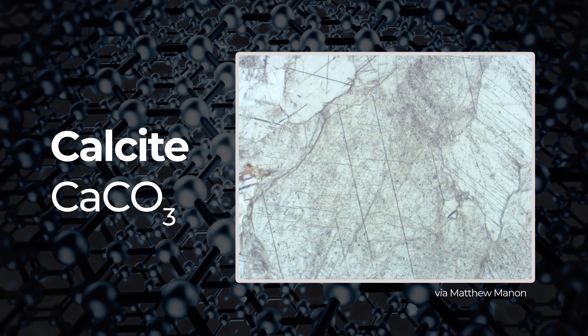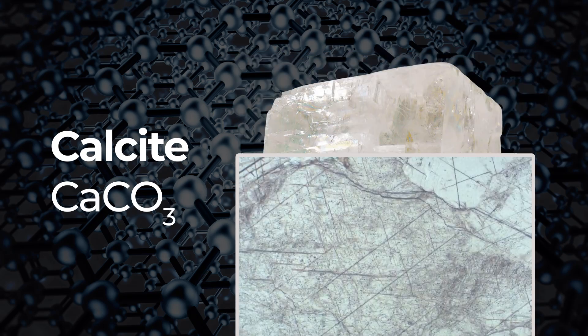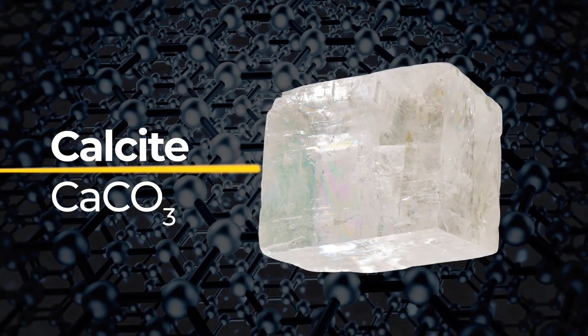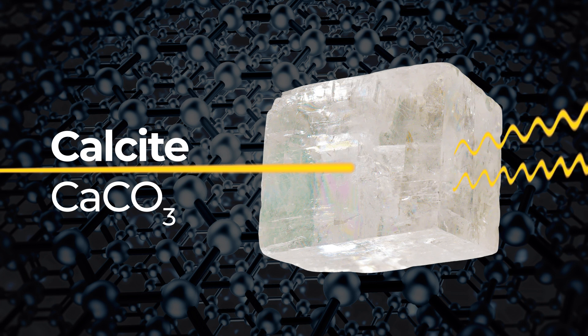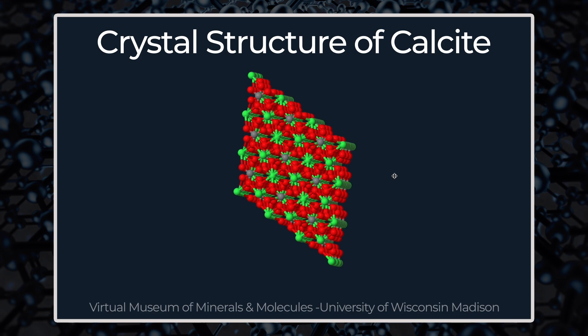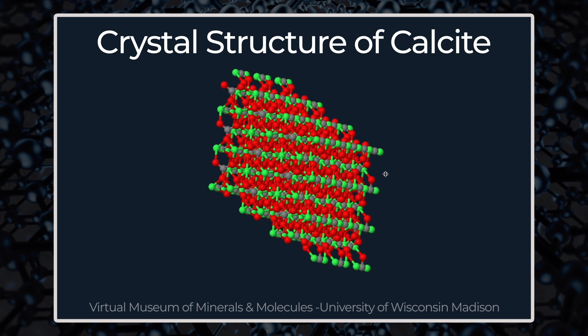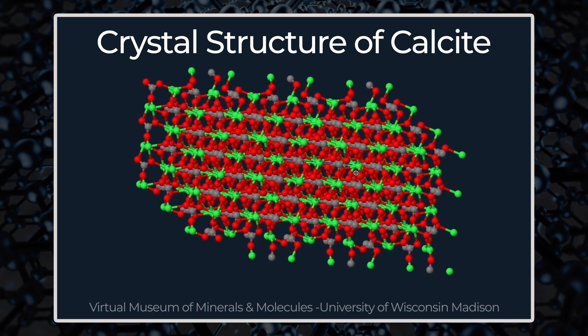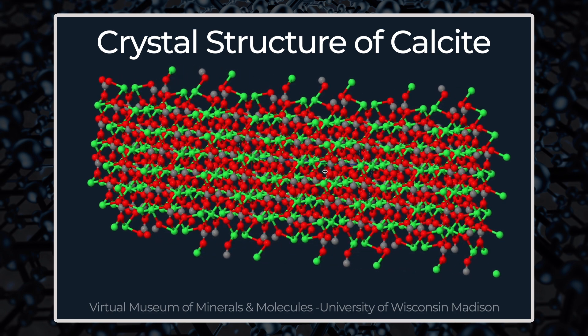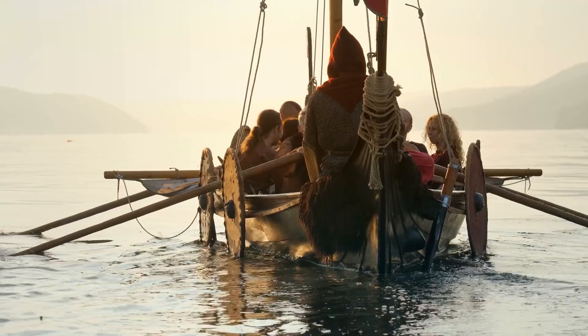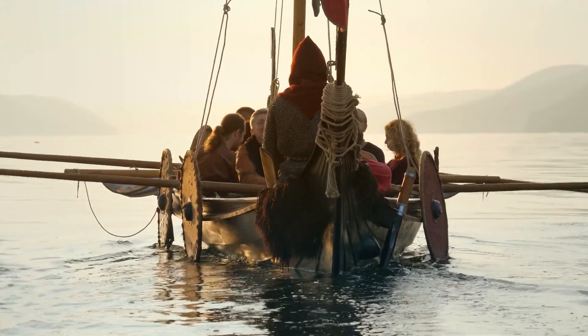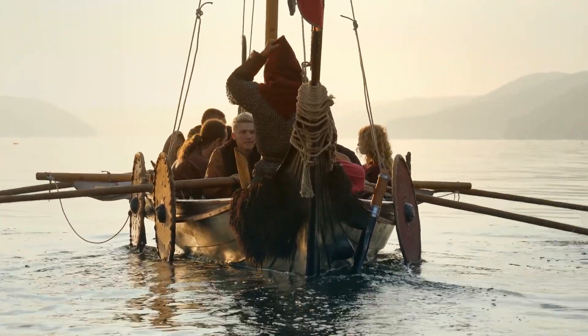Some special media manipulate light in really specific ways. The crystal we saw earlier is called calcite. It's a naturally occurring crystal and it can split a beam of light into two separate waves, each traveling at a slightly different speed. Because of its microscopic structure, changing the angle of the crystal alters the path of the light and the image that we see. There's even been some evidence that Vikings used calcite crystals to navigate their ships on cloudy days.